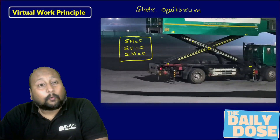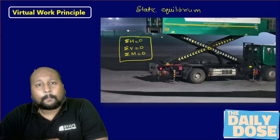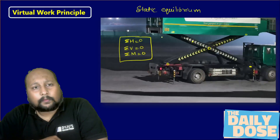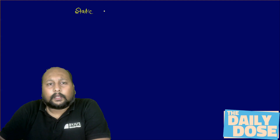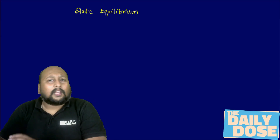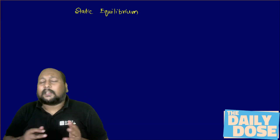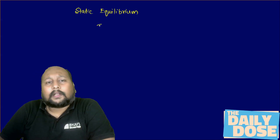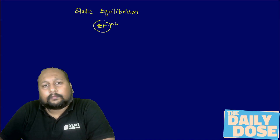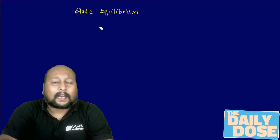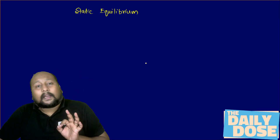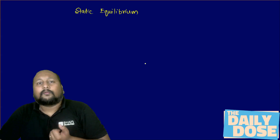This beautiful method is the Virtual Work Method, or Principle of Virtual Work. To understand it, let us consider a very simple aspect: if a body is in static equilibrium, the body is at rest and not changing its position. That simply means the total summation of forces is equal to zero. If forces are acting at multiple points, the displacement at those points due to those forces will be zero.